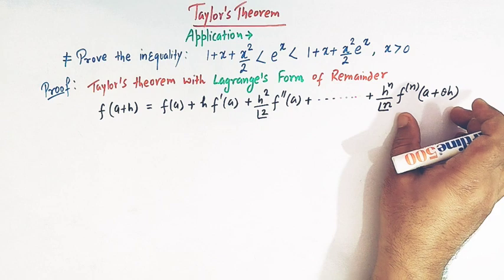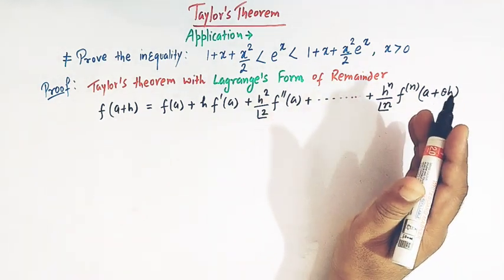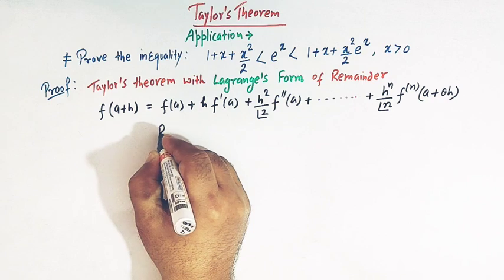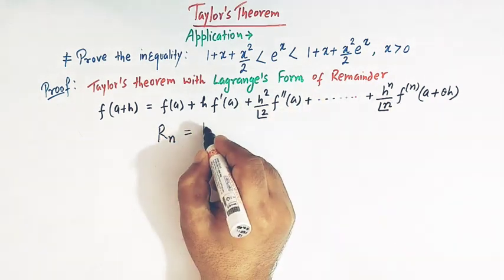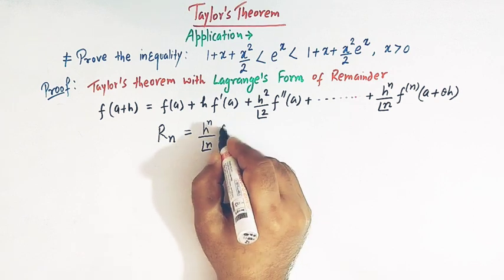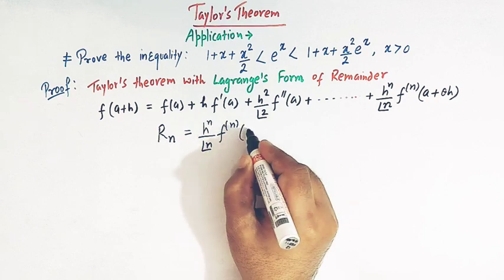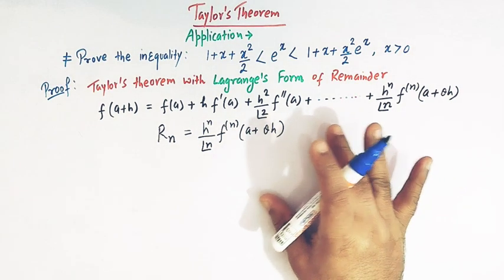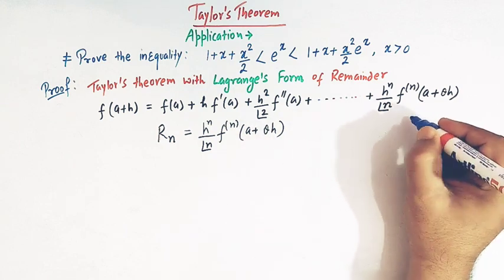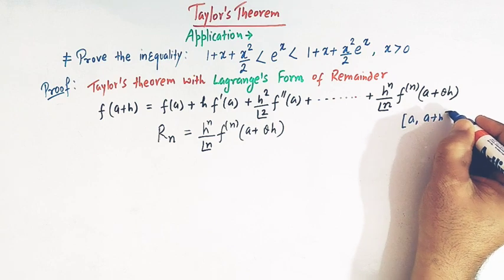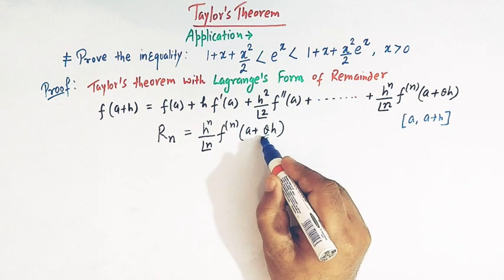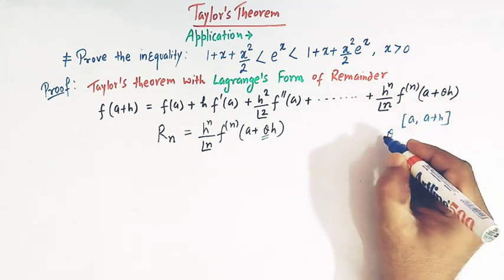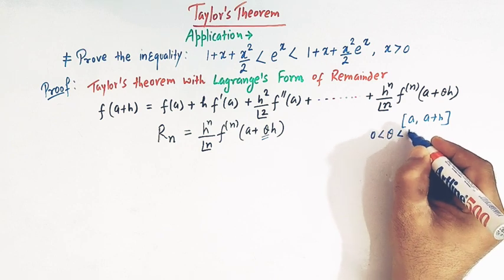The last term is known as the Lagrange's form of remainder after n terms. We write Rₙ = hⁿ/n! · fⁿ(a + θh). In this form of Taylor's theorem we consider the closed interval [a, a+h], and θ is the key term from the mean value theorem, lying between 0 and 1.